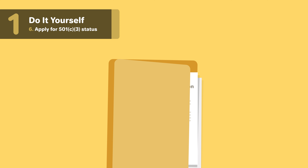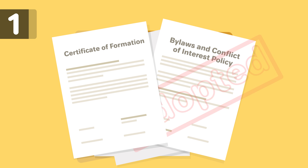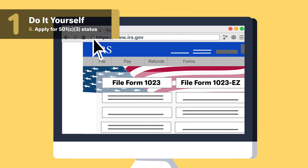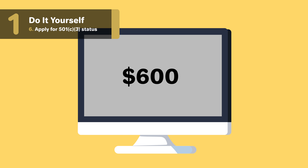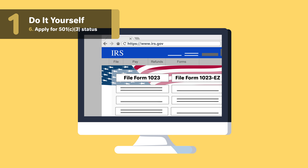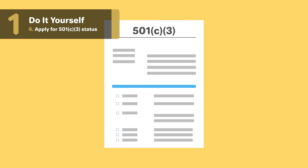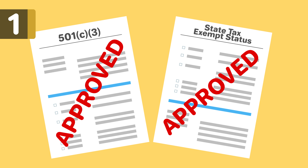Before your nonprofit can apply for 501c3 status, it must file the Articles of Formation with the required provisions, adopt the bylaws and conflict of interest policy, and have an EIN number. To file for tax-exempt status, most organizations will need to file Form 1023 online or by mail and pay a fee of $600. If your organization's annual gross receipts are below $50,000, you may be able to file Form 1023-EZ with a fee of $275. You can check your eligibility with the link in the description below. Once you receive your 501c3 determination letter from the IRS, your nonprofit will automatically be exempt from Missouri state income tax.